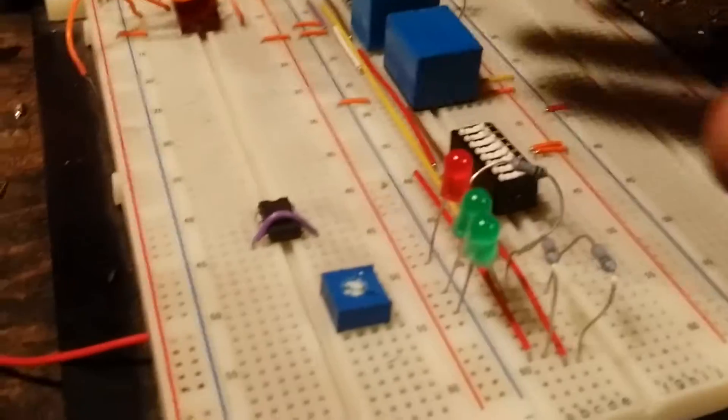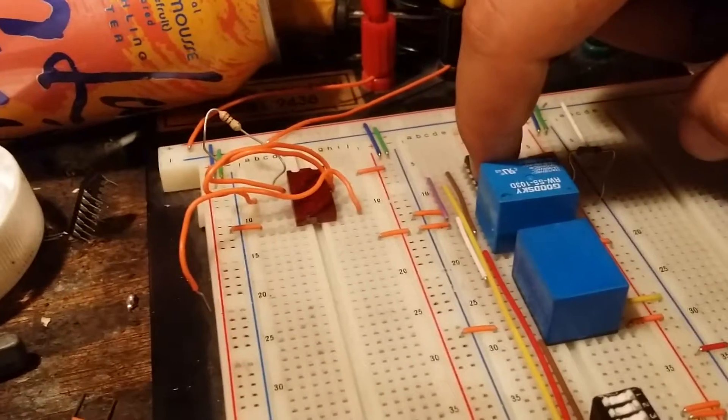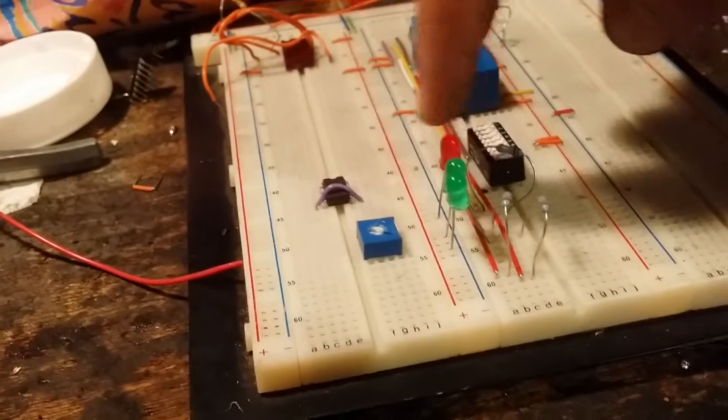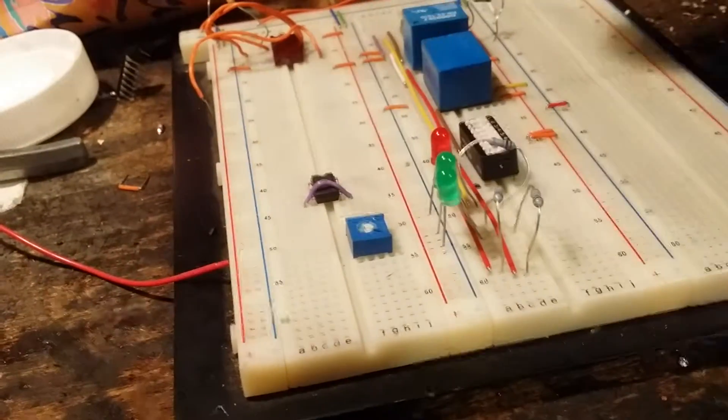So then, when it inputs either 1 or 0 in these two, it goes to the gate here. It's only using one gate. And then it comes out as an answer through here and goes to ground, giving you your answer. Simple as that.